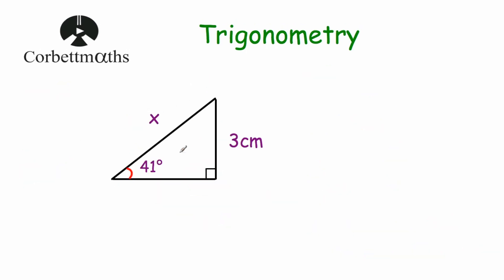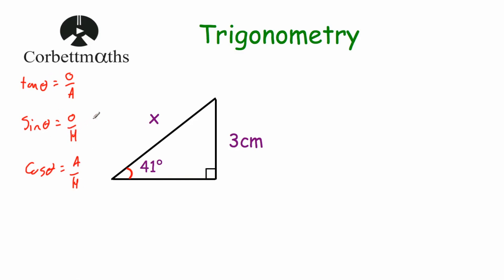Our next question has a right-angle triangle where the side opposite the right angle is x, the length of one side is 3 centimetres, and the angle is 41 degrees. We want to find the length of x. Writing down our trig ratios: tan eta equals opposite over adjacent, sin eta equals opposite over hypotenuse, cos eta equals adjacent over hypotenuse. Labelling the sides: the side opposite the right angle is the hypotenuse, which is x; using the 41-degree angle, the 3 cm side is the opposite; and the remaining side is the adjacent.